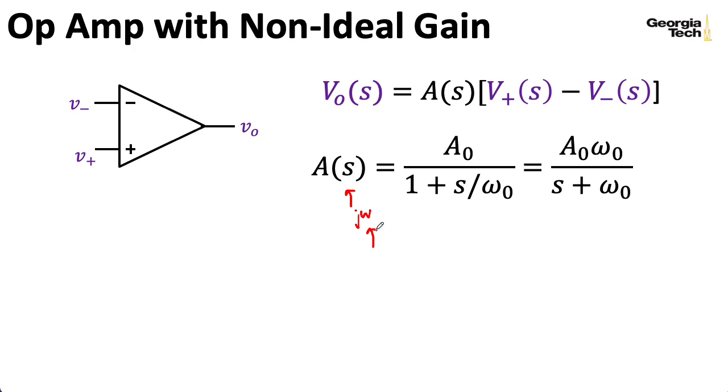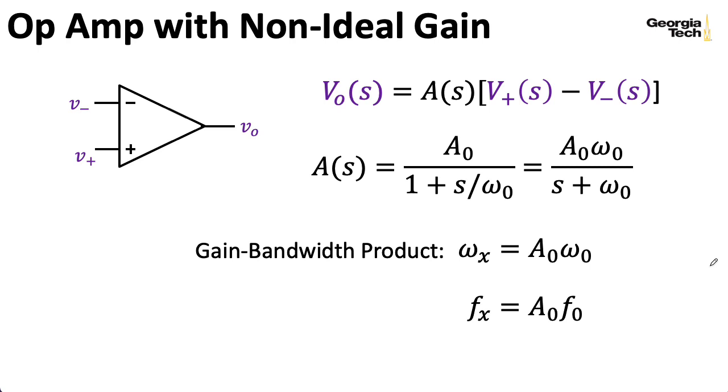We define something called the gain bandwidth product, and usually you want to actually represent this in terms of hertz. So you could divide both sides of this expression by 2 pi and write something like fx equals a0 times f0, where the f variables now represent frequencies in hertz. And I should mention that we're assuming that the inputs here have an ideal input impedance of infinity, so there's no current flowing through here, and the output of the op amp is a perfect voltage source, so it has an output impedance of zero.